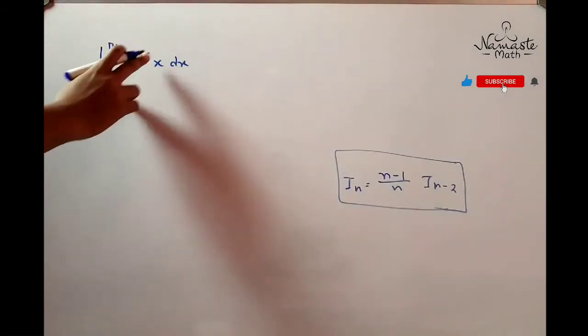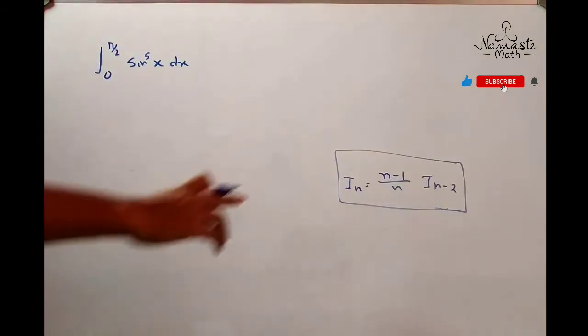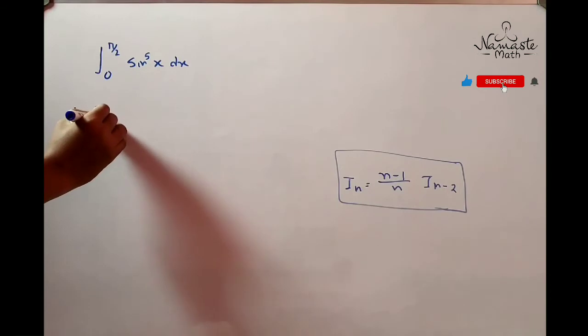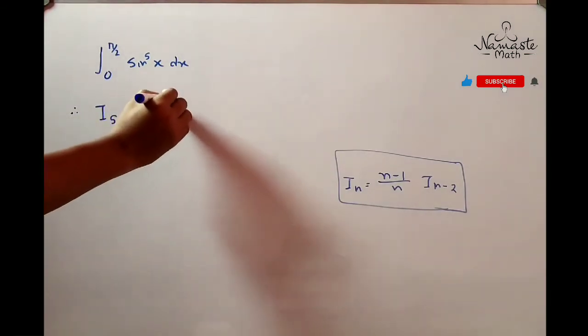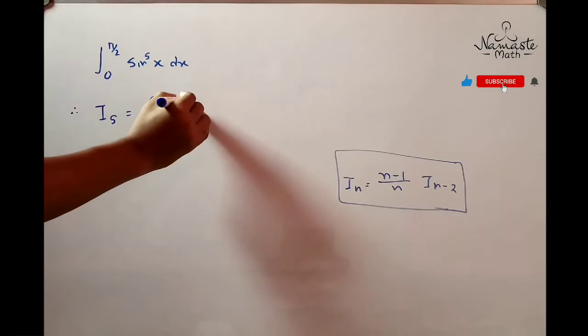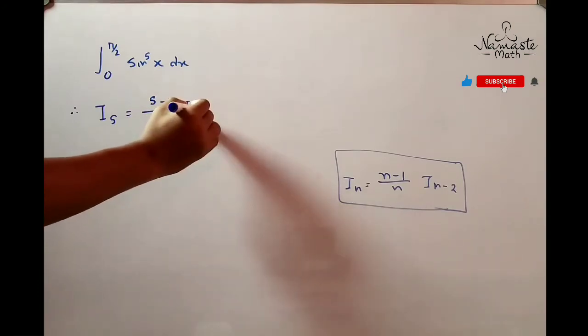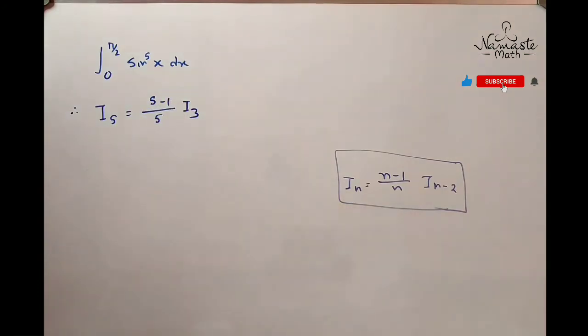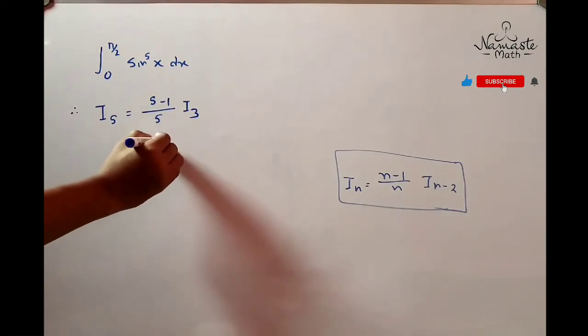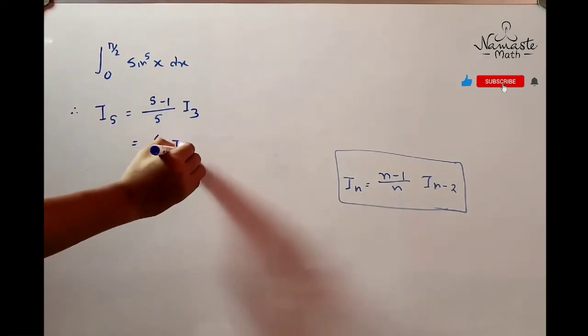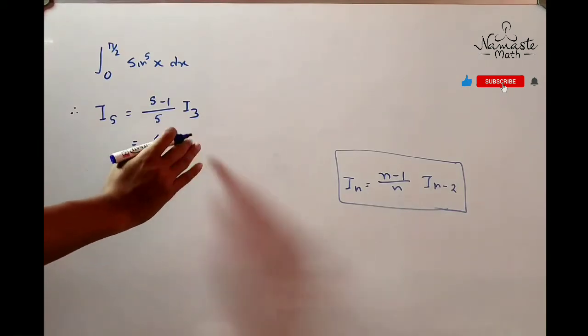Now we have the formula on the right side of the board. We will use it to solve this integral: 0 to π/2 sin^5 x dx, which means I5. Using the formula where n is 5, we get (5-1)/5 times I(5-2), which is I3. So I5 = 4/5 times I3.